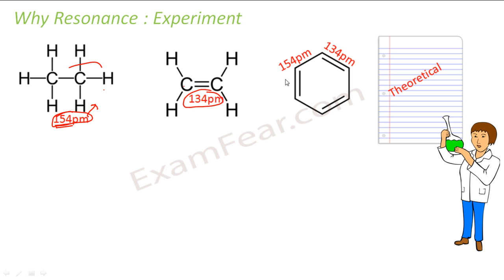With this knowledge, if I draw a benzene structure and number the carbons 1 through 6, the bond between carbon 1 and carbon 2 should theoretically be 134 picometers because it is a double bond. That is the theoretical expectation.